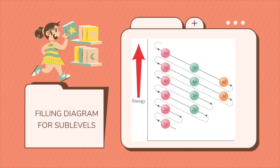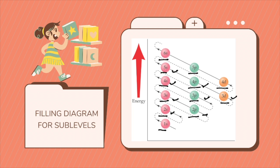Now this is how we fill up the diagrams for our sublevel. We have 1s, followed by 2s, 2p, 3s, 3p, 3d, 4s, 4p, 4d, 5s, 5p, 6s, and so on. But when you fill this up in order, it has to be 1s, 2s, 2p, 3s, 3p, 4s, 3d, 4p, 5s, and so on. This is according to the Aufbau principle.